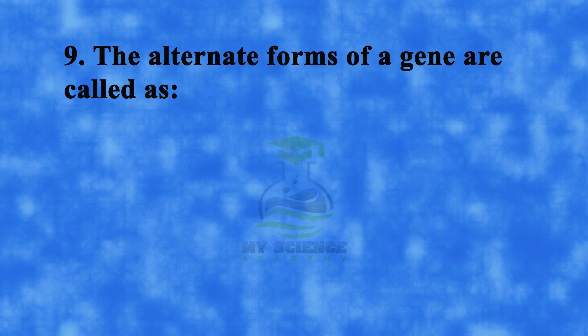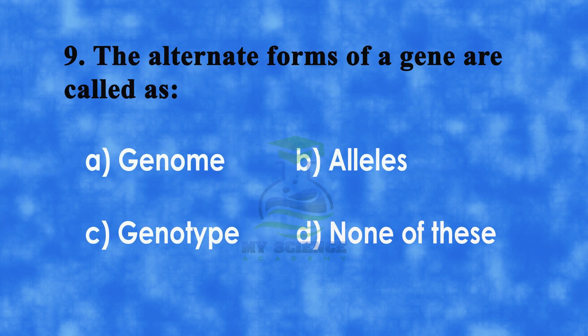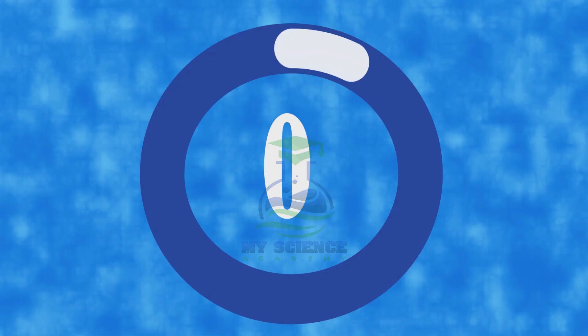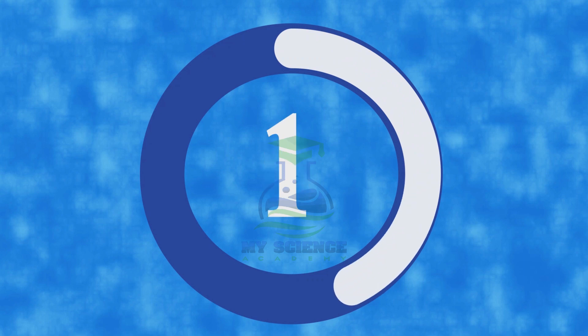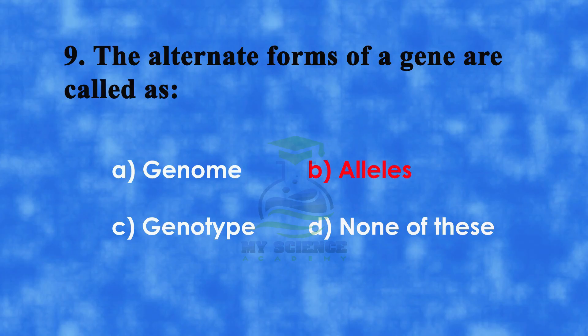Question 9: The alternate forms of a gene are called — A. Genome, B. Alleles, C. Genotype, or D. None of these. Correct answer is B. Alleles.